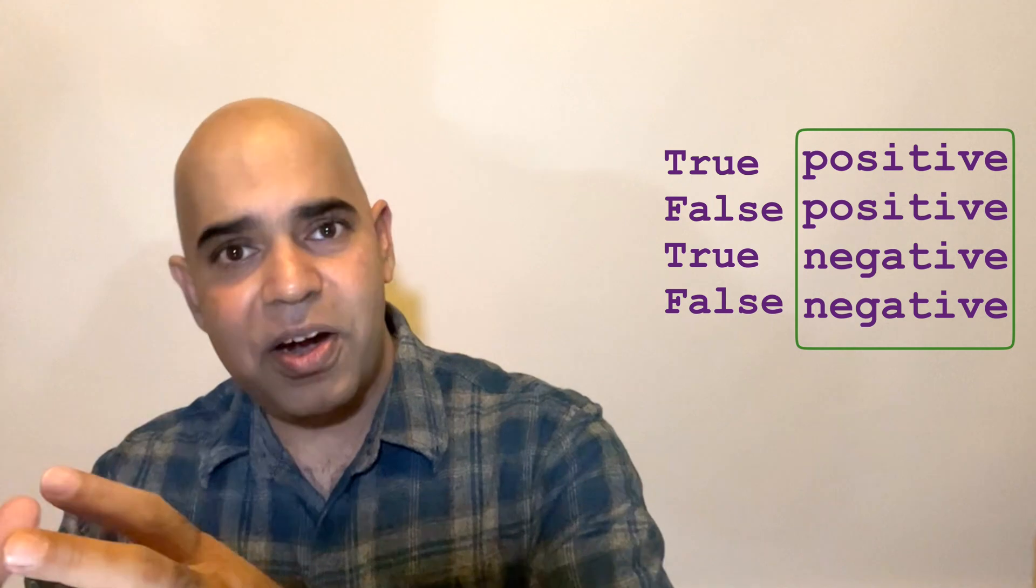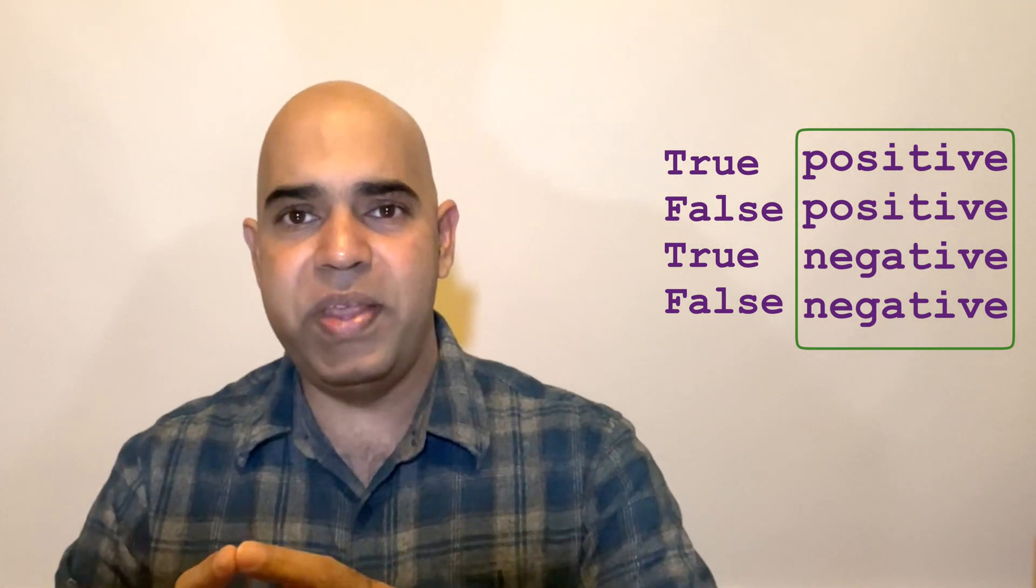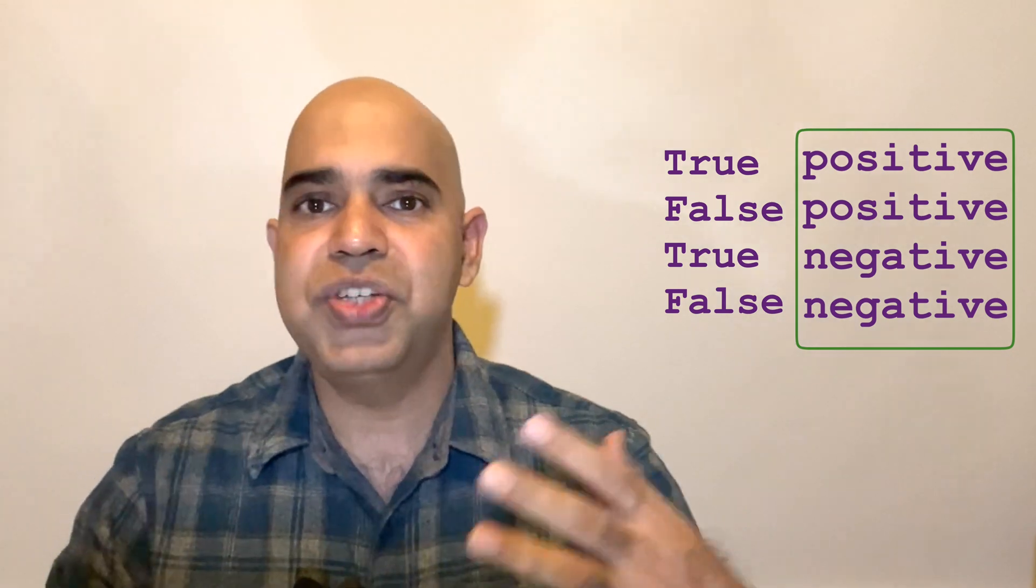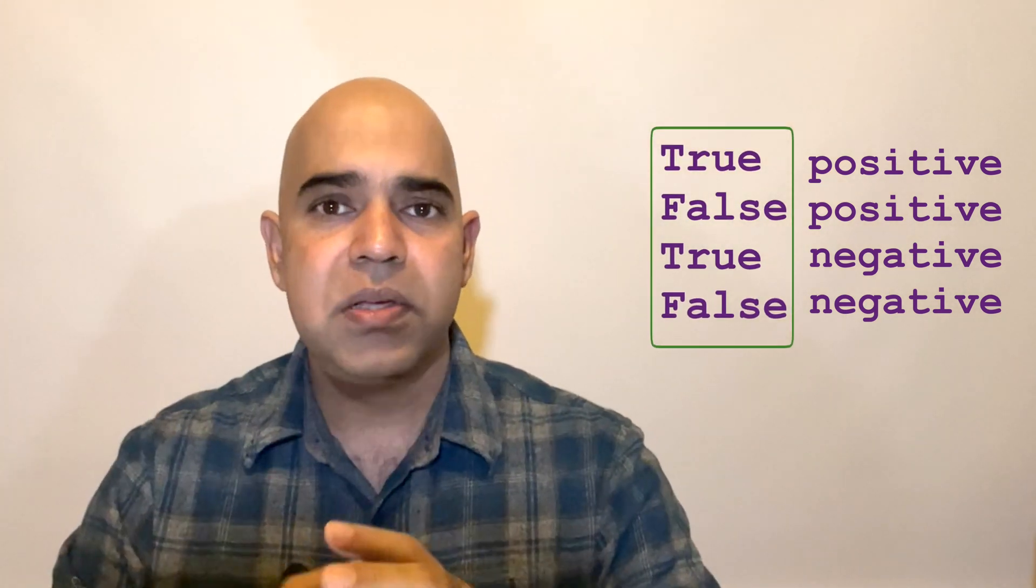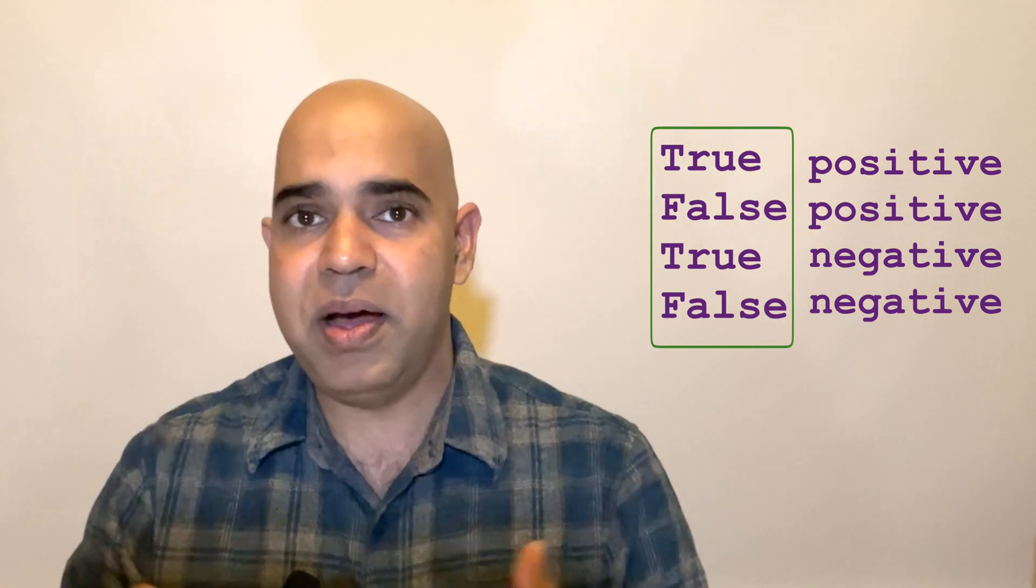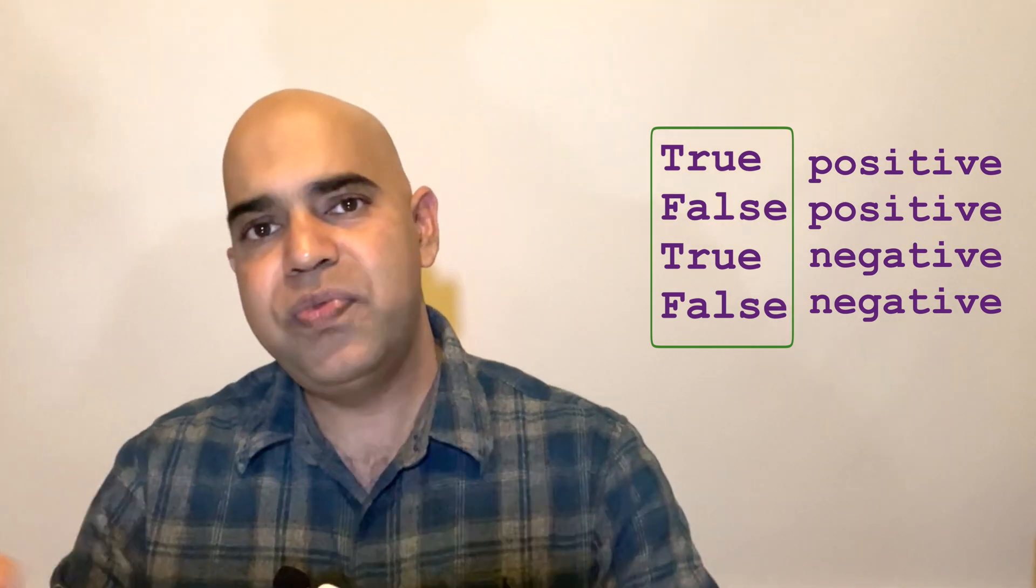That is, in true positive, false positive, true negative, and false negative, the second term is the outcome of the experiment, positive or negative, such as COVID positive or COVID negative. The first term, true or false, comes from reality. If reality agrees with the experiment, then the first term becomes true. Otherwise, the first term is false.